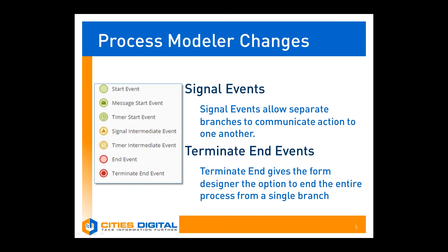Some of the process modeler changes in Forms 10 are really powerful. The addition of signal events now allows communication between separate branches of a forms process, meaning activity in one branch can actually cause a change to routing in another branch. There are also terminate end events, which are more powerful than the original end event. This terminate end event actually terminates the entire forms process when reached, so you can end a full form in one branch.